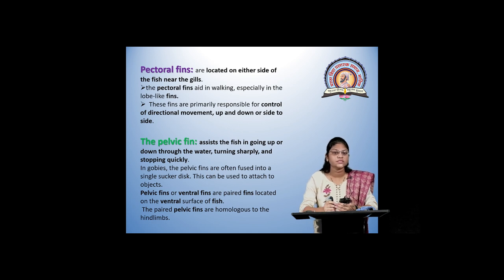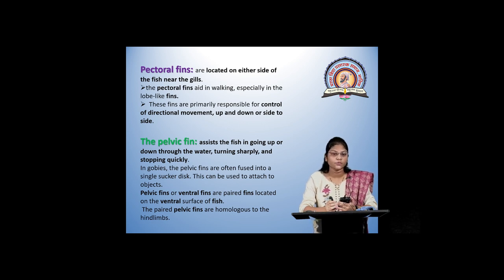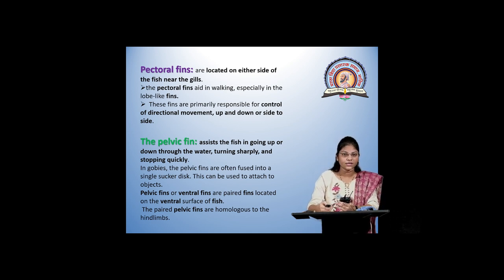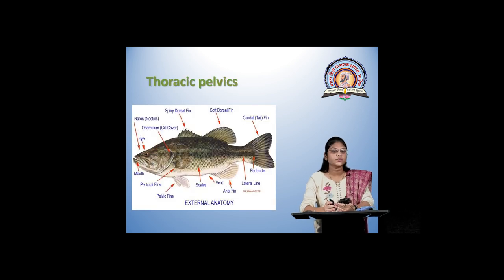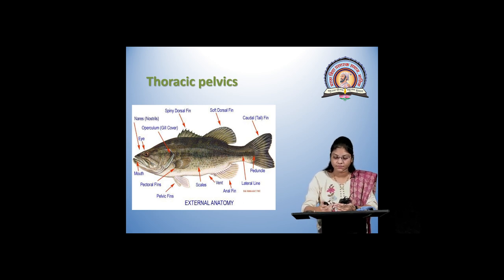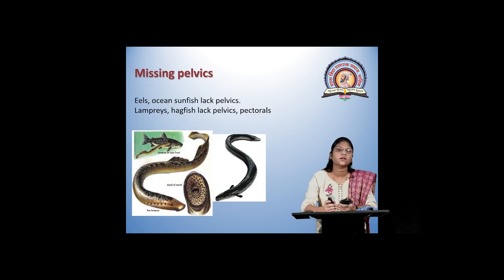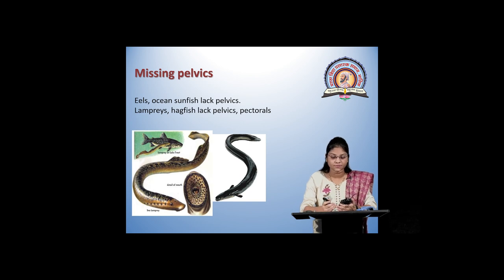The pelvic fin is attached to the abdominal region of the fish. It assists the fish in going up or down through the water, also in turning sharply and stopping quickly — functioning like hind limbs. Sometimes both fins are attached at the abdominal region, so they are known as abdominal pelvics. In thoracic pelvics, both fins are attached at the thoracic region near the gills. In some fishes, both pelvic and pectoral fins are absent — for example, in lampreys and hagfish.